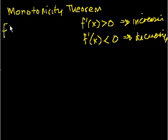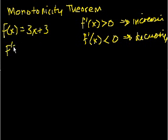So the first function they give is f(x) is equal to 3x plus 3. Well, what's the derivative of this? f'(x) is equal to 3. Well, for any value of x, this is positive. Right? f'(x) is positive for all values of x. So this thing, using the monotonicity theorem, is increasing for all values of x.